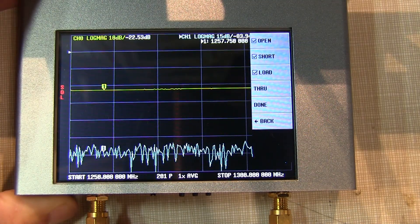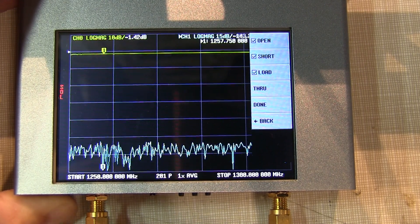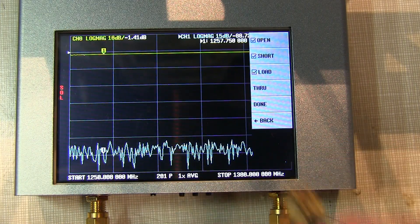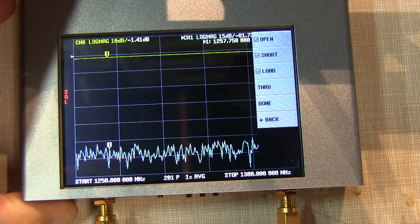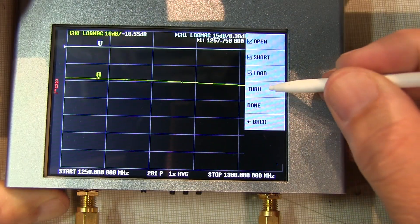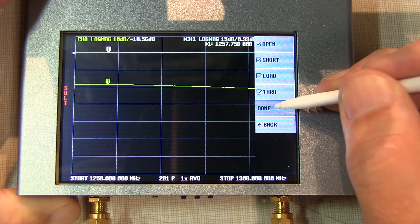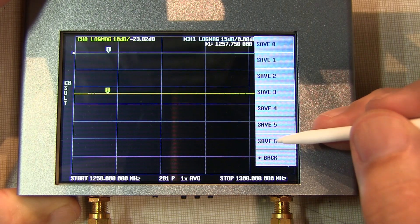The next step is to do the final calibration of a through. I'll disconnect my load and connect up two ends of my SMA cable to create the through connection. Touch through. With that done, we'll hit done and I'm going to save this into slot number six.